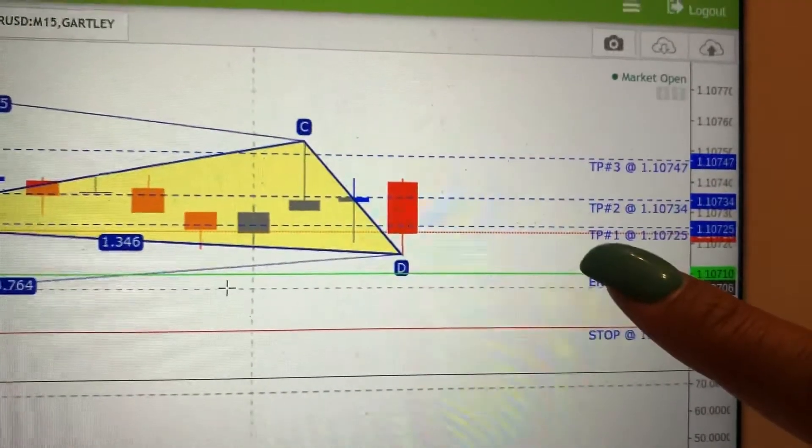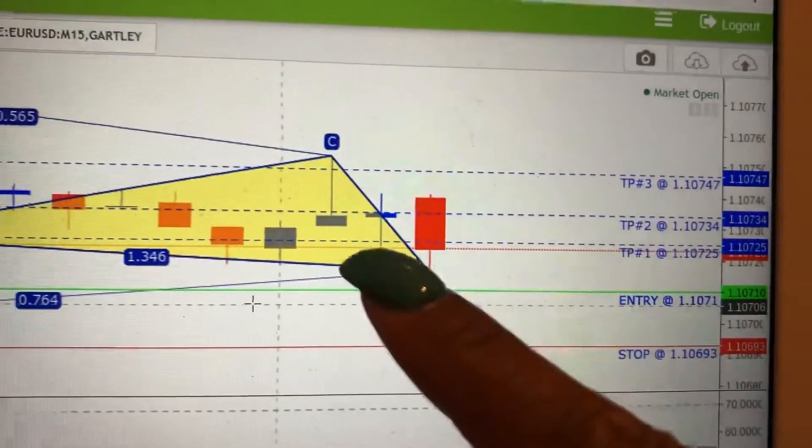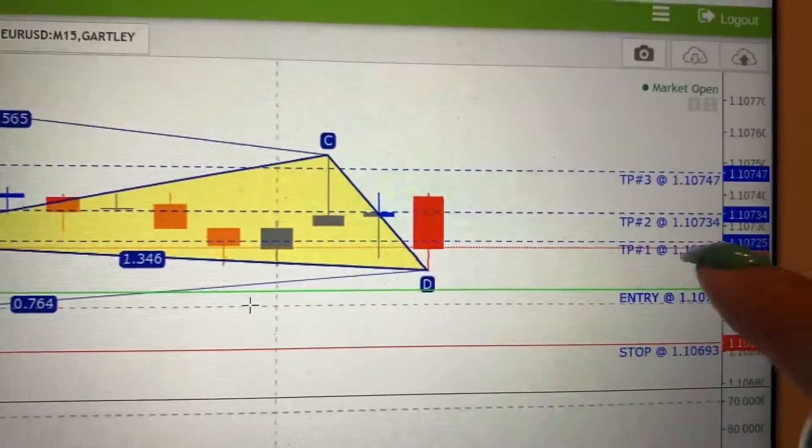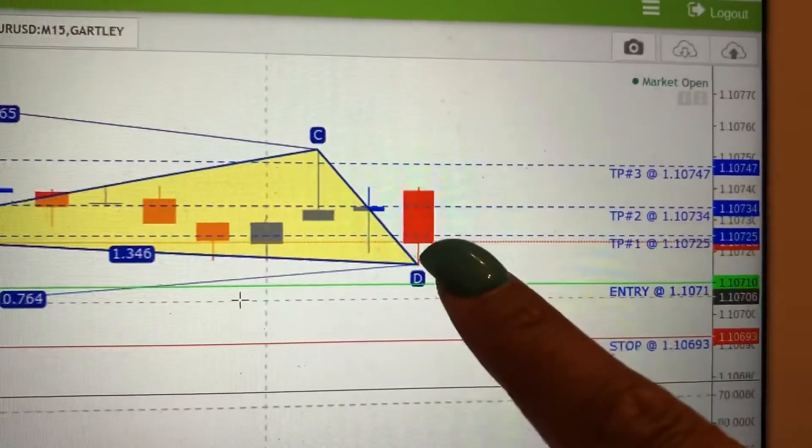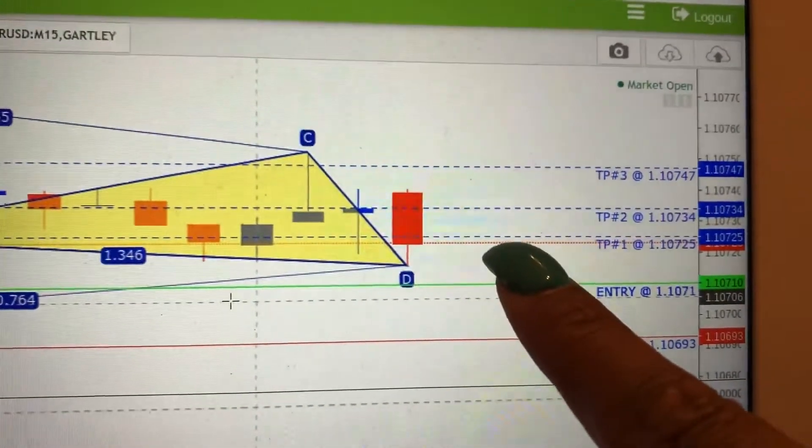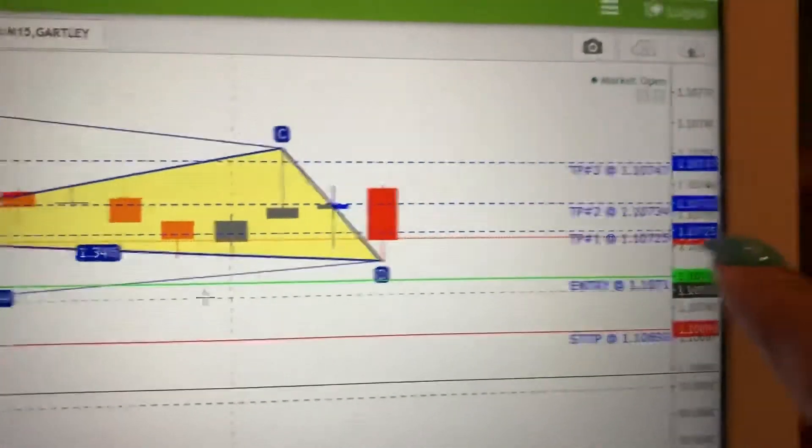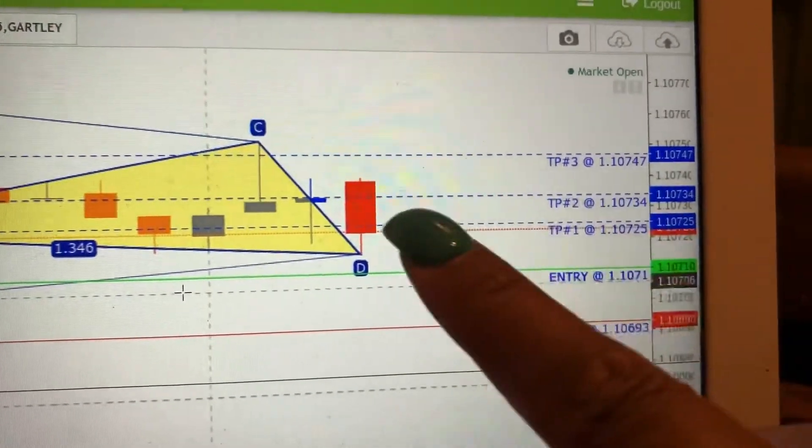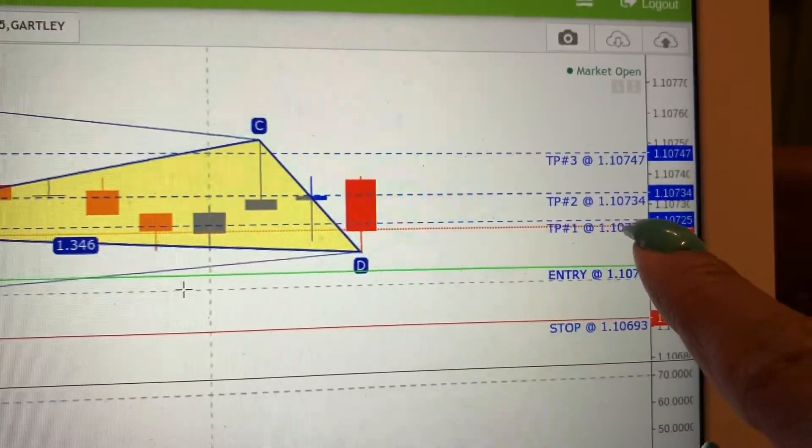And hopefully, it either take profit one, two, or three. So, this right now, the market, this dotted line shows you where the market currently is. So, the market right now is above our entry. This dotted line, it moves up and down as it's creating candlesticks.